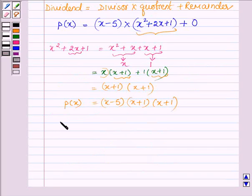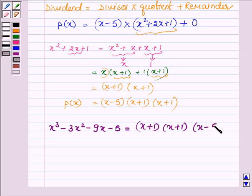And thus, the given polynomial x cube minus 3x square minus 9x minus 5 is equal to x plus 1 into x plus 1 into x minus 5.